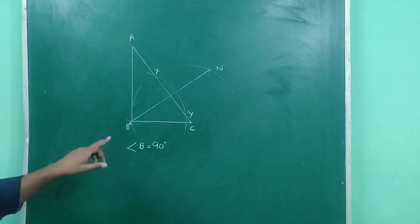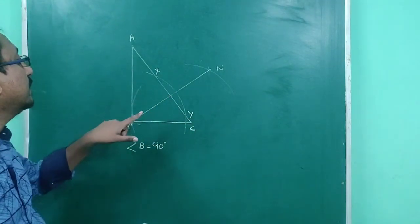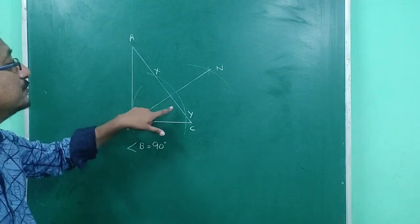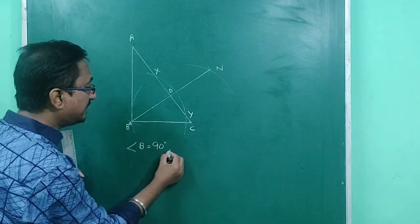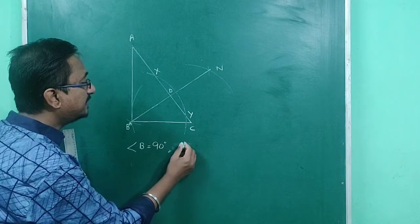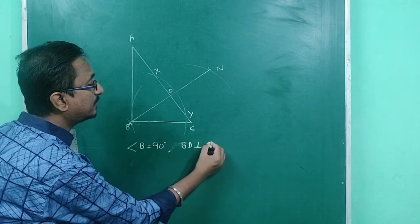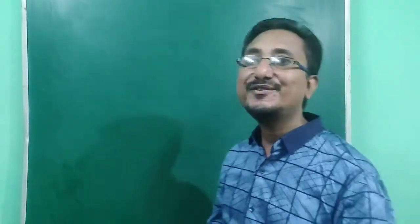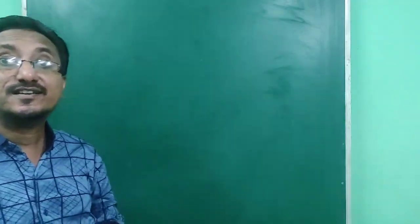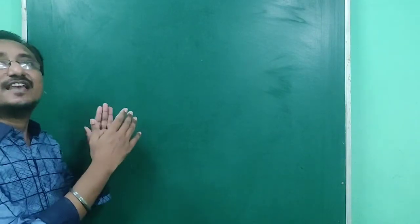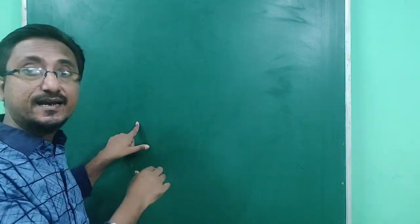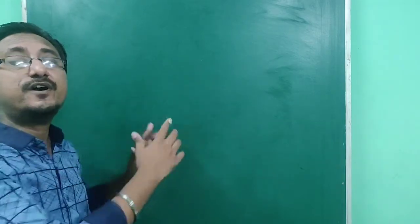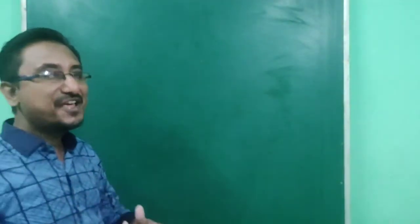We have constructed a perpendicular from point B to the hypotenuse AC, and we call that foot D. So we can write BD is perpendicular to AC. Today we have learned how to construct perpendicular bisectors of a line segment, the bisector of a given angle, and a perpendicular from a point to the hypotenuse of a right triangle.